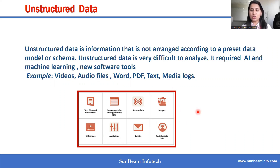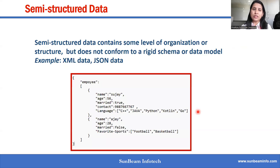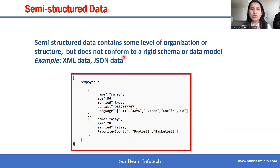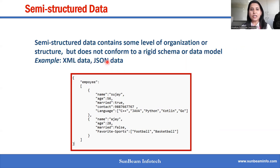The third type is semi-structured data. Semi-structured data contains some level of organization or structure but does not conform to a rigid schema or data model. Examples include XML data and JSON data.